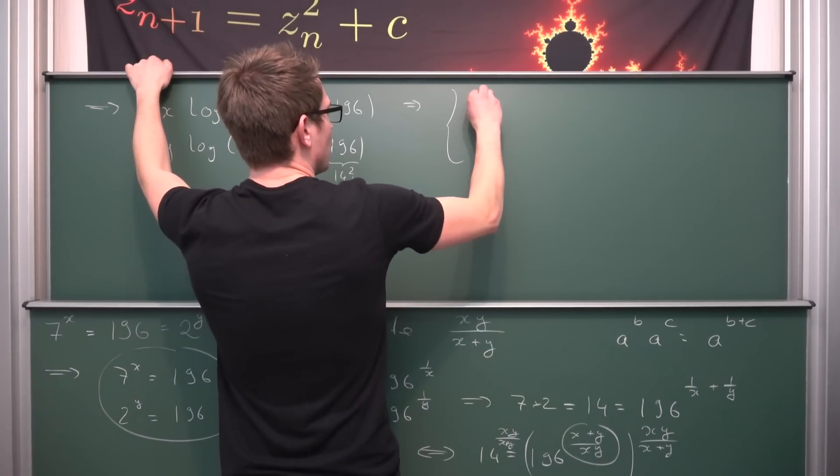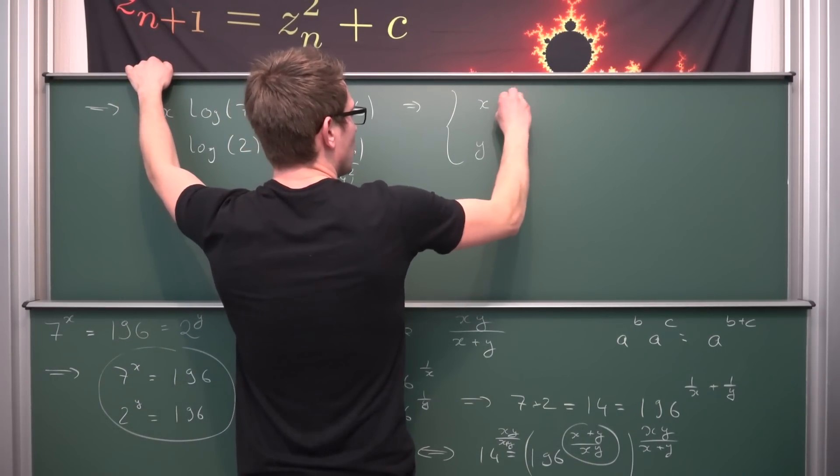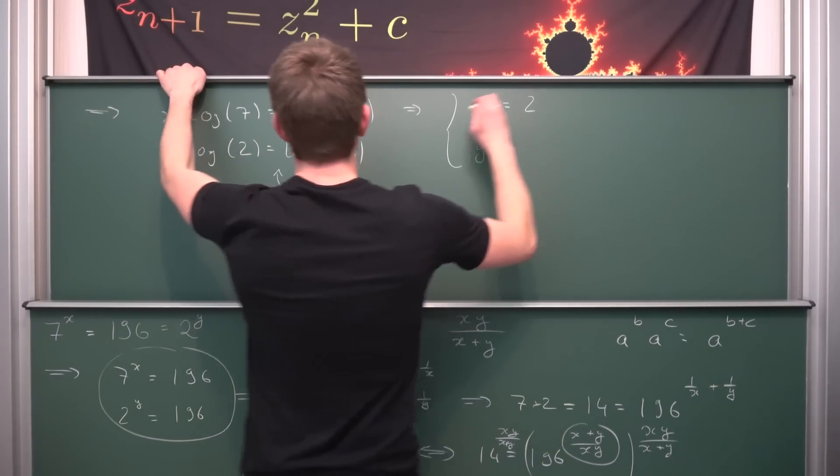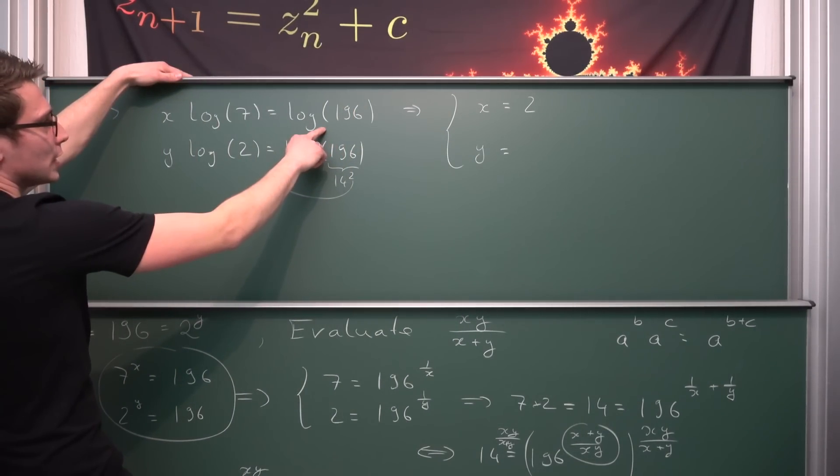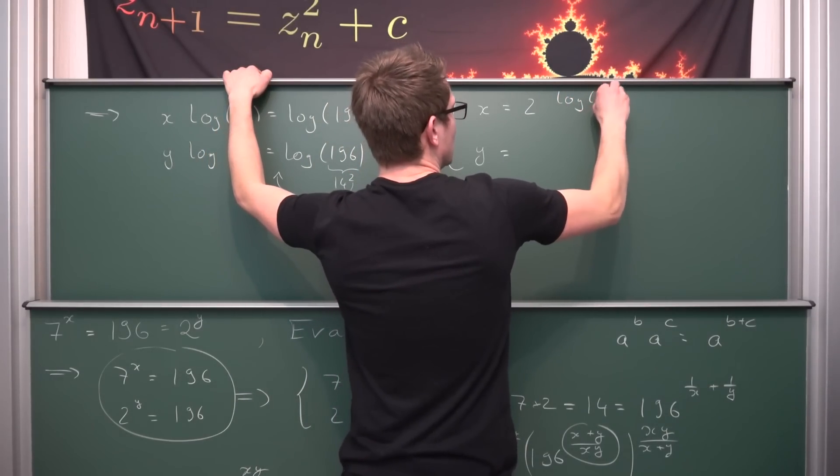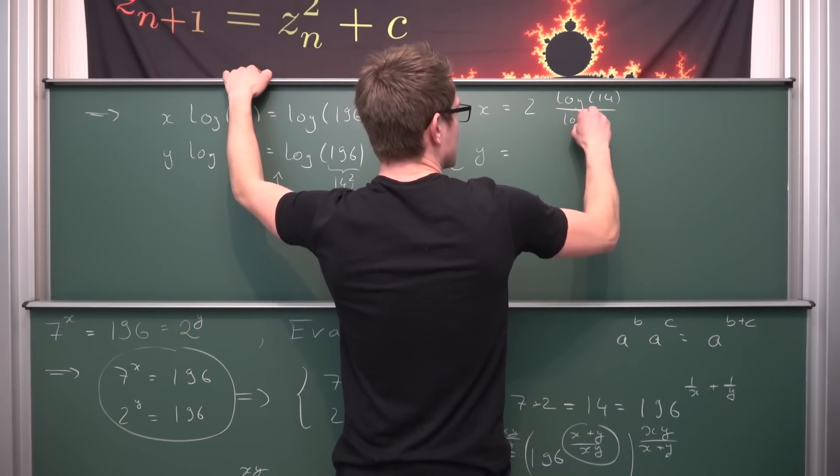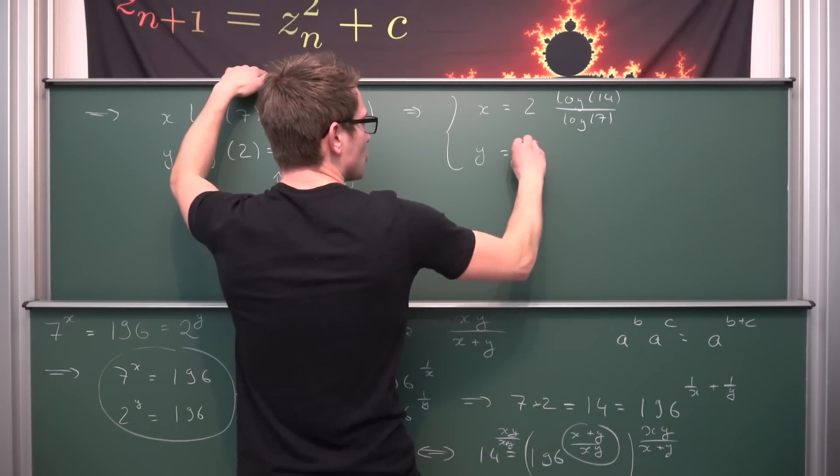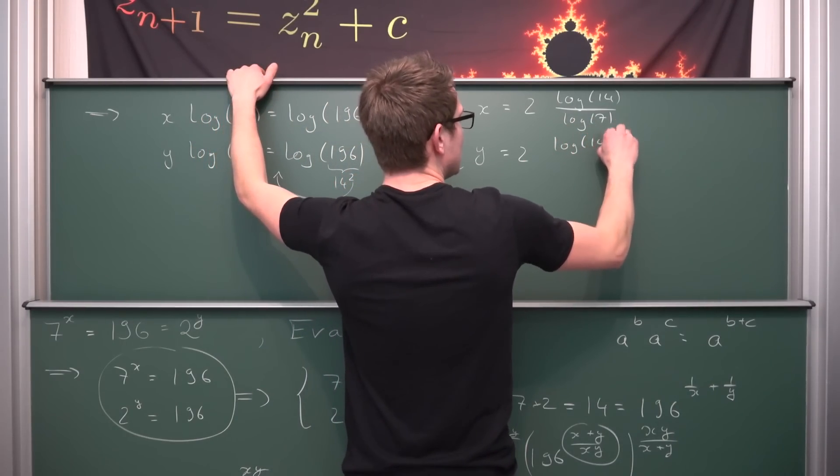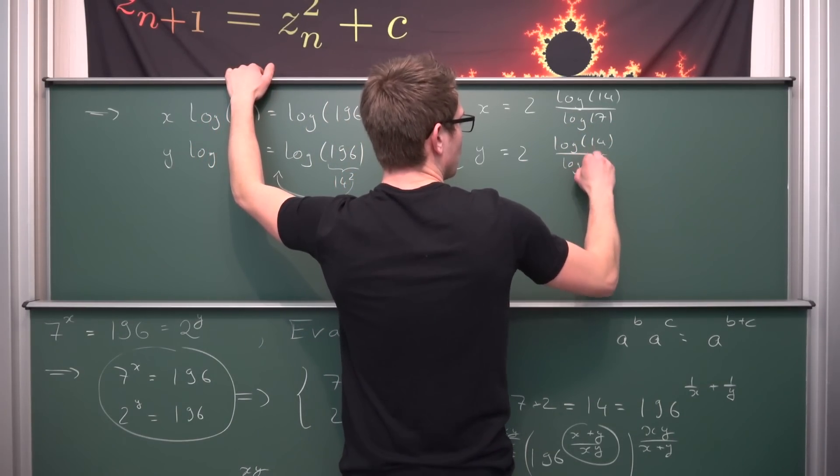We are going to get a new system of equations, namely that x and y are respectively equal to, here in our case we are going to get two terms. Now what we are going to get is log of 14 divided by the log of 7. And also down here we are going to get 2 times the log of 14 divided by the natural log of 2.